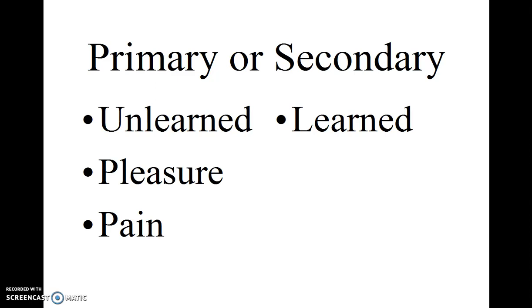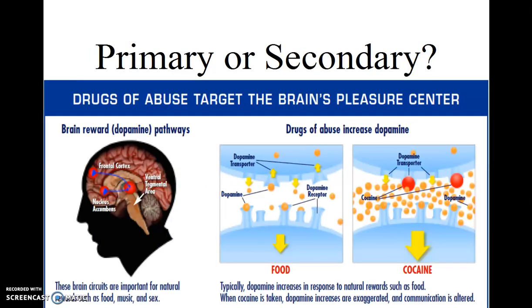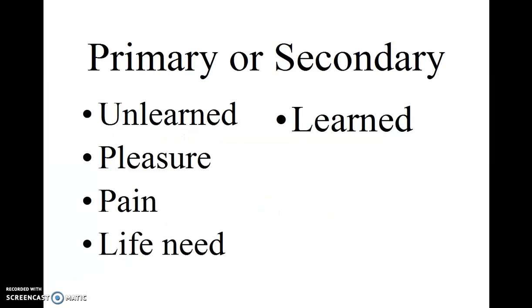Some examples of primary reinforcers that are not learned would be any experience of direct pleasure or pain. This doesn't have to be learned—it's hardwired into the brain. Certain things like food and cocaine directly deliver these pleasures to the brain.